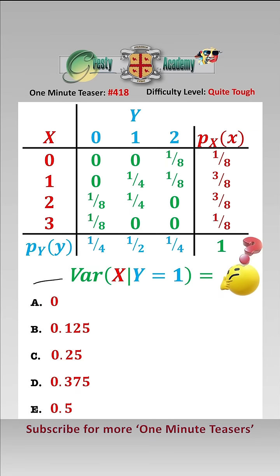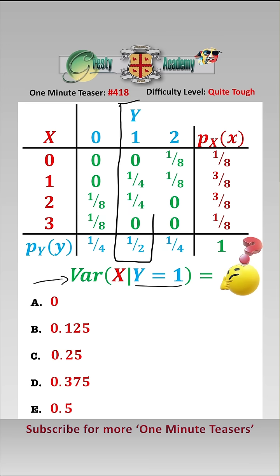We want the variance of x given that y equals 1, so we're looking at conditional probabilities here, which means we are only interested in this bit of the table. The probability that x equals 0, given that y equals 1, is 0.